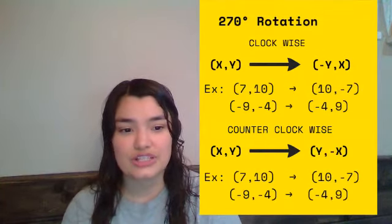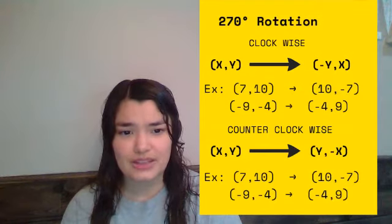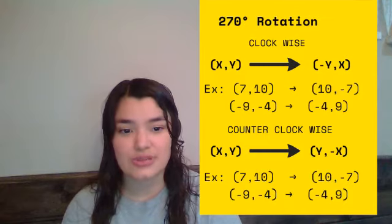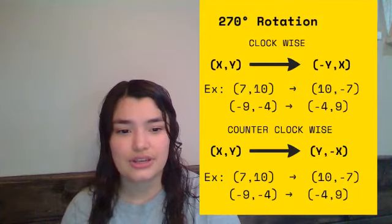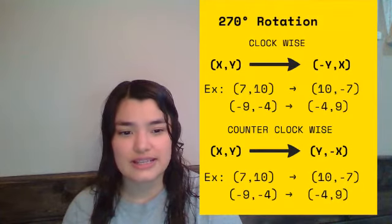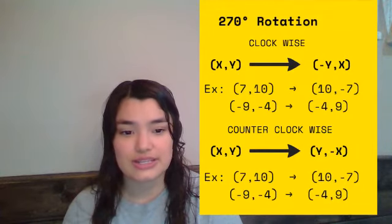The y stays the same, and the 7 will change to its opposite sign. Again in the second example, (-9,-4). Your -4 stays the same, and the 9 changes to its opposite sign.